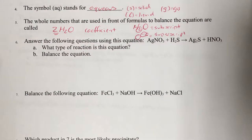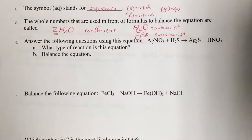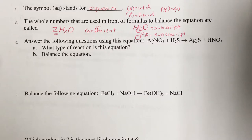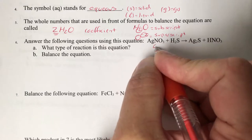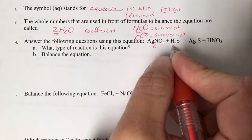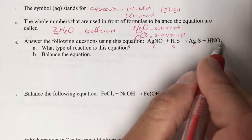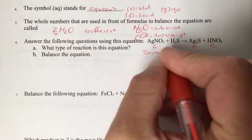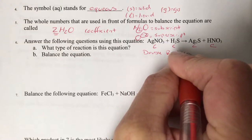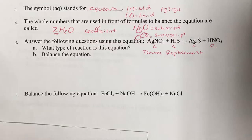For the reaction type question: there's a plus sign on both sides, so it cannot be synthesis or decomposition — it must be single replacement, double replacement, or combustion. Looking at the substances: each has two or three capital letters, meaning everything is a compound. Everything being a compound makes it double replacement. If we have a solubility table, we can go further and determine if it's a precipitation reaction.